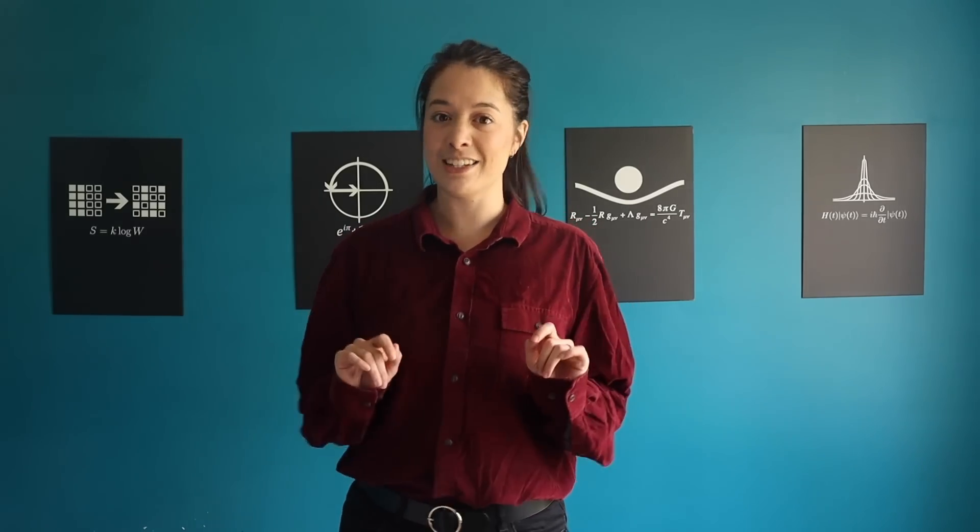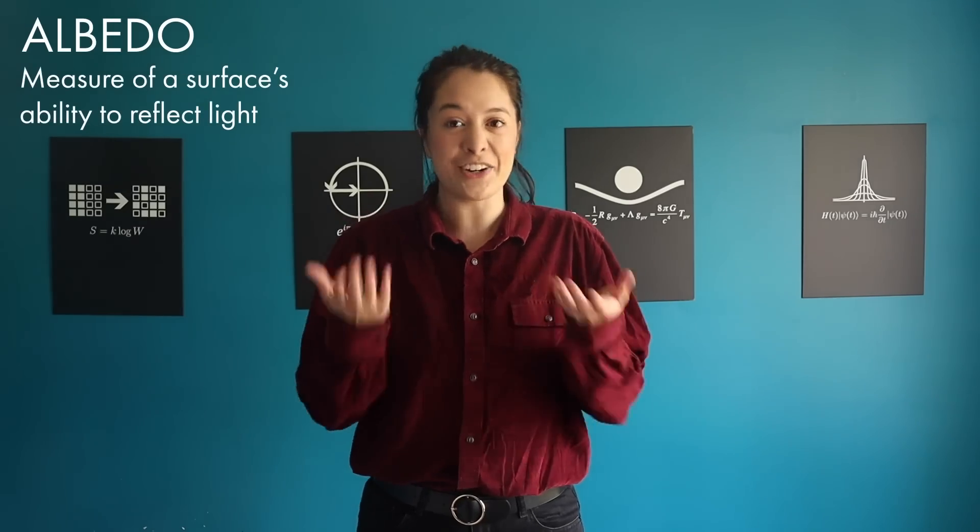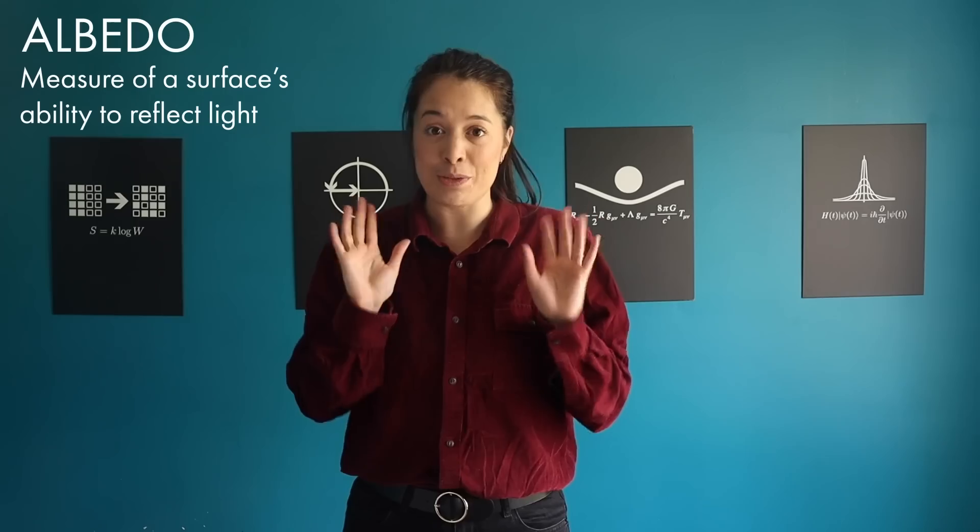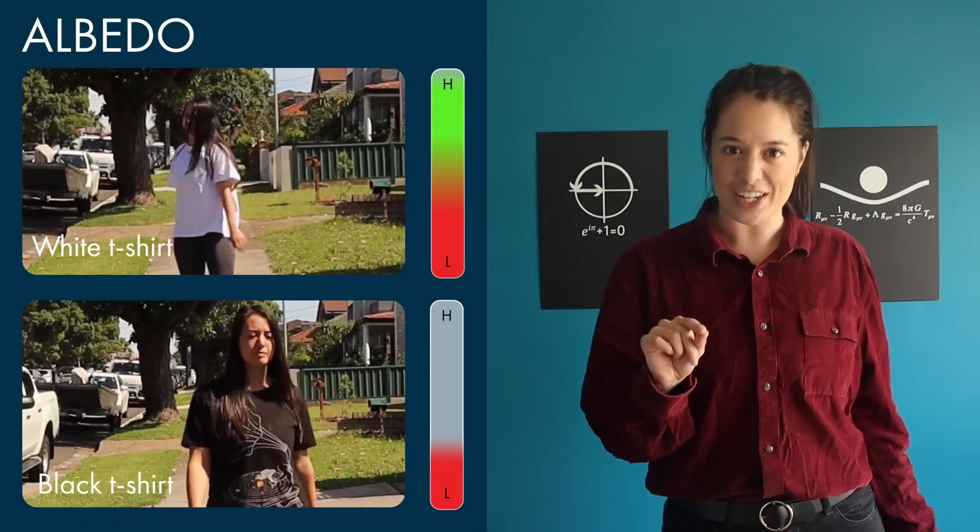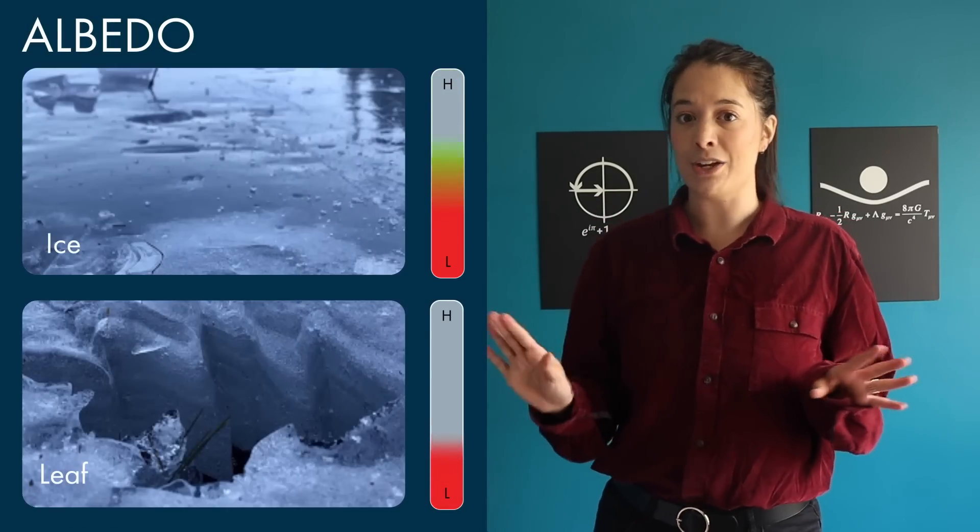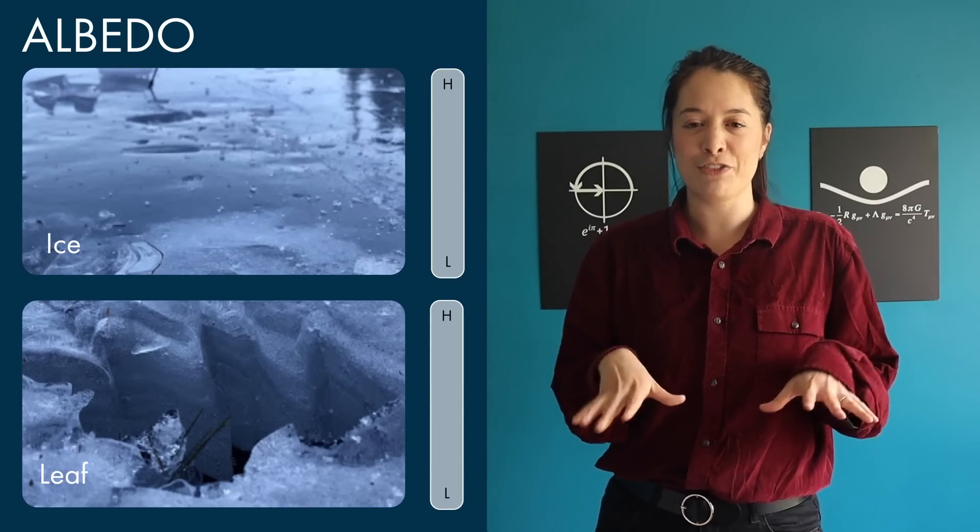The measure of a surface's ability to reflect light is called albedo. The more light it reflects, the higher its albedo. The word sounds so much like libido, it's weird. A white t-shirt has a higher albedo than a black t-shirt. This leaf had a lower albedo than the ice around it.